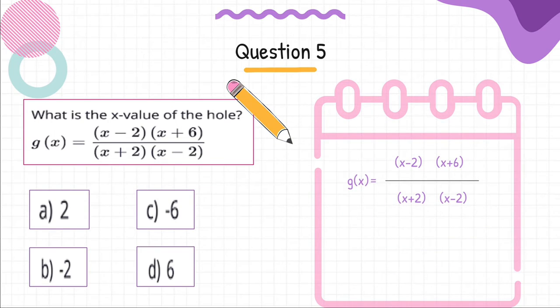Question 5: What is the x value of the hole? g of x equals x minus 2 times the quantity x plus 6, over x plus 2 times the quantity x minus 2.